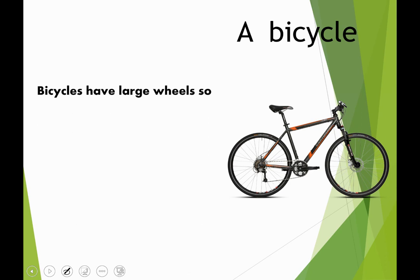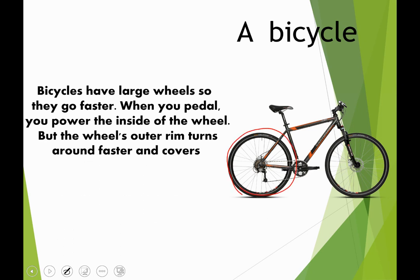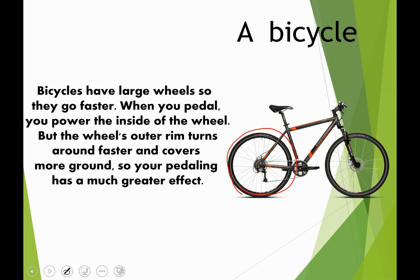Here is an example of a wheel and axle found in a bicycle. Bicycles have large wheels so they go faster. When you pedal, you power the inside of the wheel, but the wheel's outer rim turns faster and covers a longer distance, covering more ground. So your pedaling has a much greater effect.